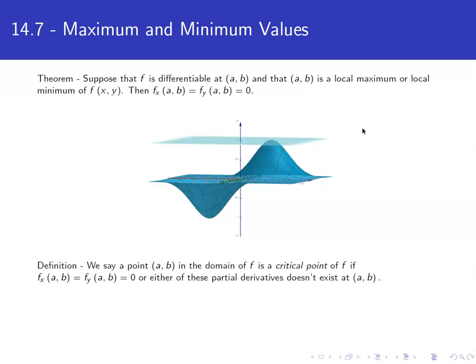Given a definition: if we have a point in the domain of f, we say it's a critical point of f if both partial derivatives at that point are zero, or one of the partial derivatives doesn't exist at that point.